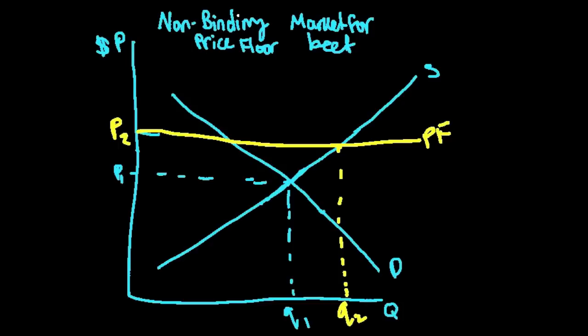Then, for some reason, the supply of beef decreases. Let's say there is an outbreak of mad cow and supply just plummets. It decreases significantly. So, we see the quantity supply decreases so much.